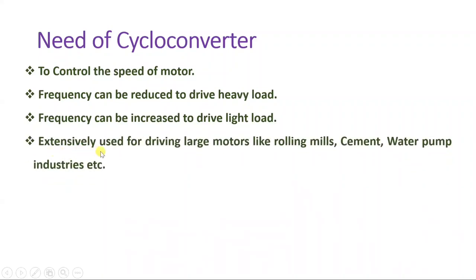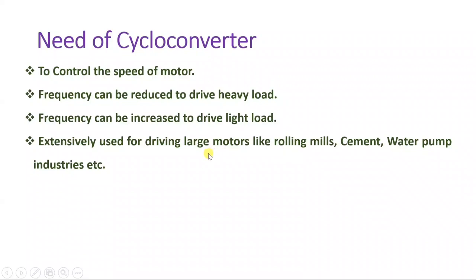Cycloconverters can be used extensively in applications where motors are used, like rolling mills, cement industries, and water pumps. In industries, it is essential to control motor speed with different ratings, and that is where the cycloconverter plays an important role.